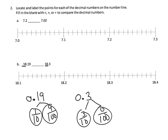You'll notice the scale here: here's 18 and one tenth, here's 18 and two tenths. 18.19 means 18 and one tenth plus nine hundredths — so the little dashes are the hundredths. 18.19 goes right here — that's 18 and one tenth, and then plus nine hundredths is right here. I'm going to write that down: 18.19.